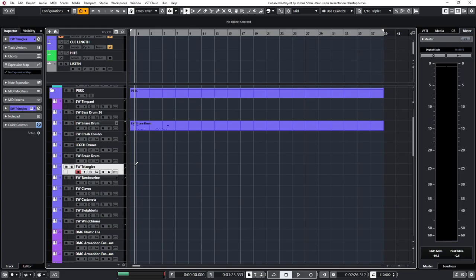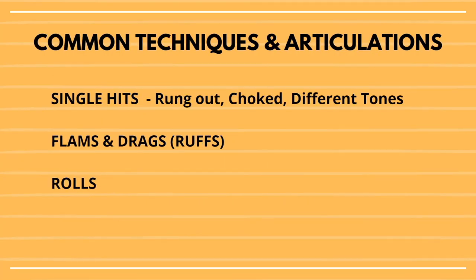Going to the next slide, I want to talk about common techniques and articulations. As a percussionist, there are different rudiments and techniques we use, but generally the three main ones are your single hits, flams and drags, and rolls. Your single hits are basically when you strike the instrument and let it either ring out, or you can choke it to make a more staccato feel.